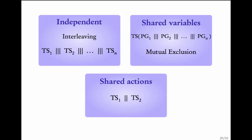This brings us to the end of this module. We have seen three kinds of concurrent systems: independent concurrent systems, concurrent systems with shared variables, and concurrent systems with shared actions. For independent systems we defined the interleaving operator. For those with shared variables, the interleaving operator was applied to program graphs. For concurrent systems with shared actions, we defined the handshake operator. For a more detailed description of these ideas, you could refer to the book.